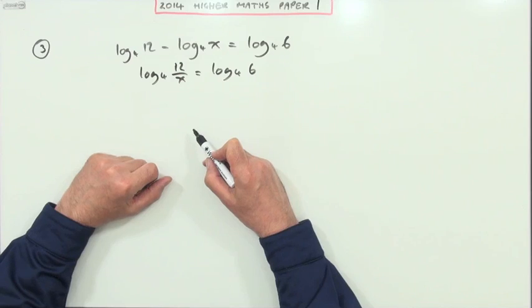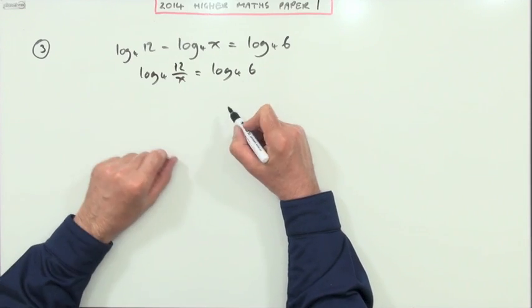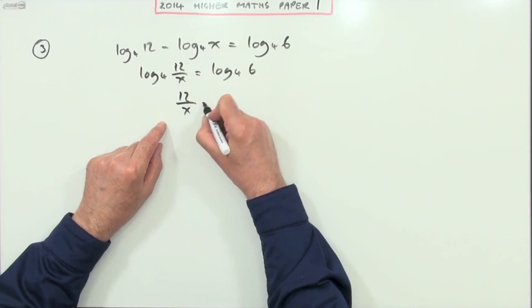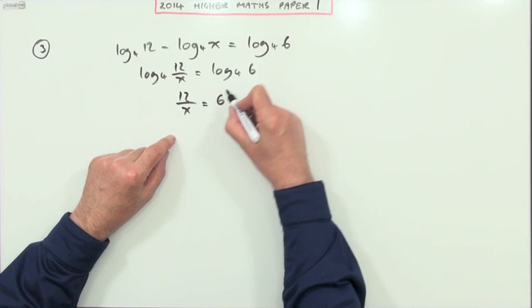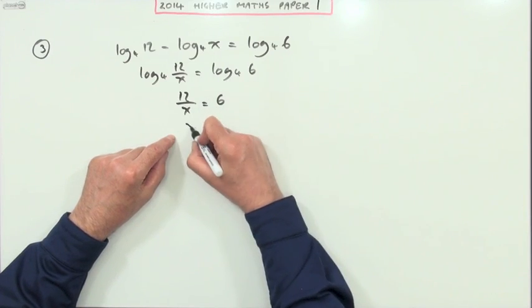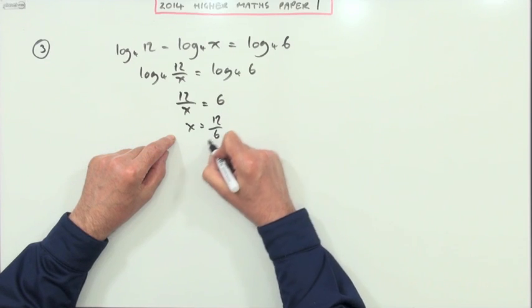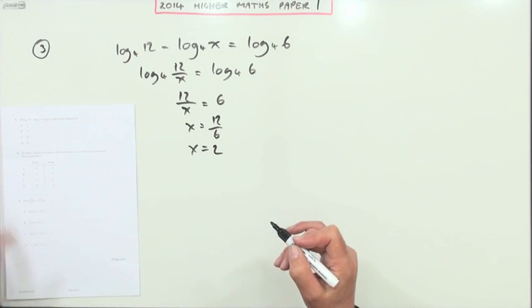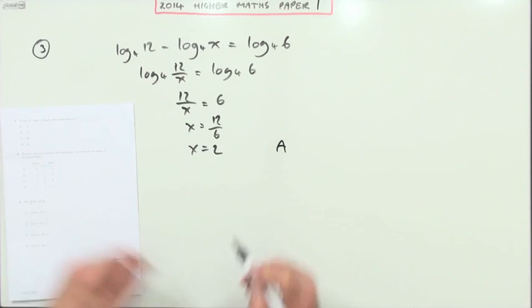If these two are equivalent, then the numbers they're operating on must be equivalent. Or you could think of taking the inverse of both sides, so 12 upon x must be 6, and then rearranging that by cross multiplying, x would be 12 over 6. So x is 2, but you could have spotted that at a glance straight away. x equals 2, so that's A.